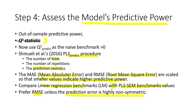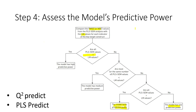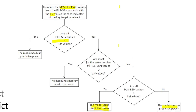These statistics are calculated twice: first for the linear regression benchmark model (LM) and then for the PLS-SEM model. If all PLS-SEM values are less than the LM values, the model has high predictive power. If most indicators have lower PLS-SEM values, the model has medium predictive power. If only a few (e.g., 3–4 out of 10) indicators have lower PLS-SEM values, the model has low predictive power. If none are lower, the model lacks predictive power.